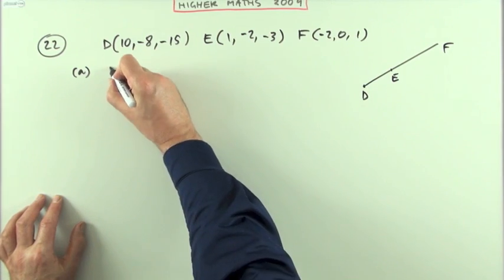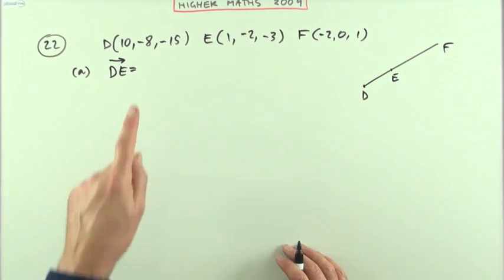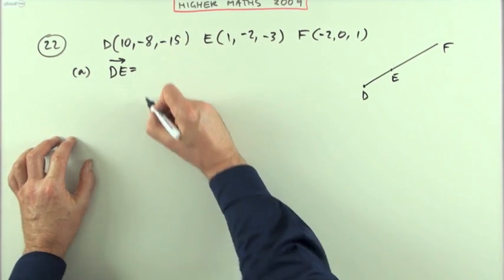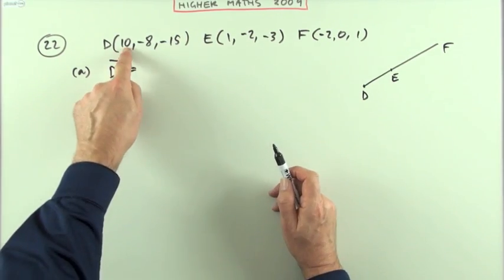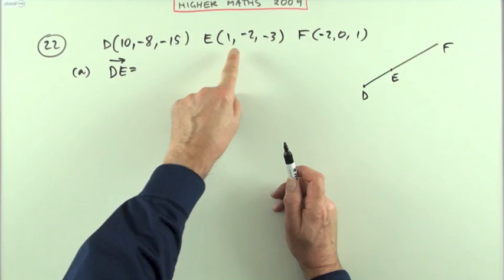So let's work out DE and EF. What's the vector DE? What's the displacement that takes you from D to E? You can always just work that out yourself because if you're starting at 10 and going to 1, it must have been back 9.